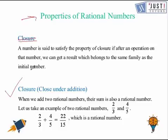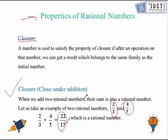First we will check the closure property under addition. We will take an example of 2 over 3 plus 4 over 5. If we add them together we get 22 over 15, which is a rational number. So we can say that closure property holds under addition.